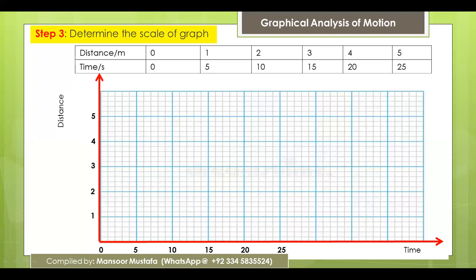Another important rule while determining the scale is that at least one-third to 70–75% of your graph must be covered by data. You should not accommodate all data points in a small portion while leaving the rest of the graph empty. Choose a scale that gives your graph an appropriate look — covering most of the available area.